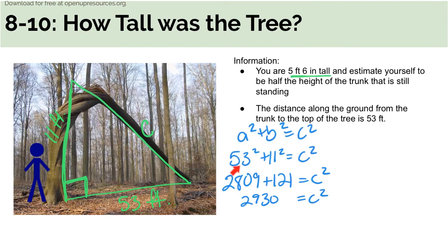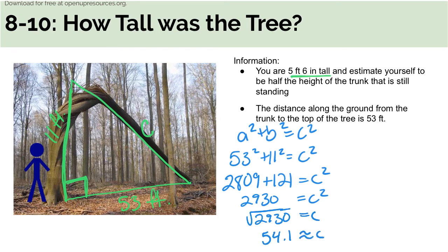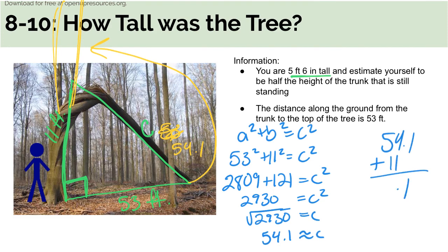53 squared plus 11 squared — those are the legs — equals C squared. Simplifying gives 2,930 equals C squared, so C equals the square root of 2,930, which is approximately 54.1 feet. That is the fallen portion of the tree. The tree was also standing at 11 feet, so I take 54.1 and add 11, and I get 65.1 feet for the total height of the tree.